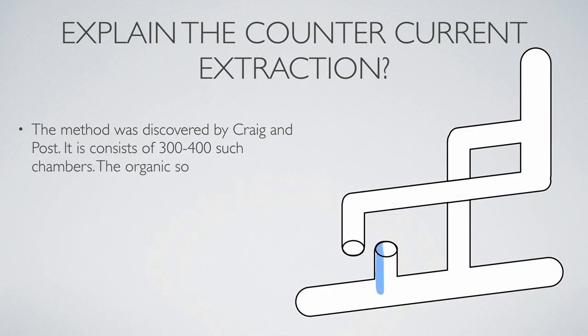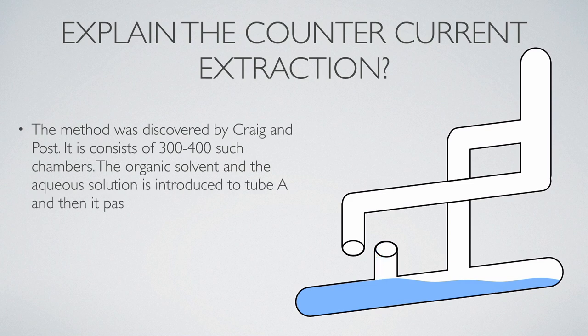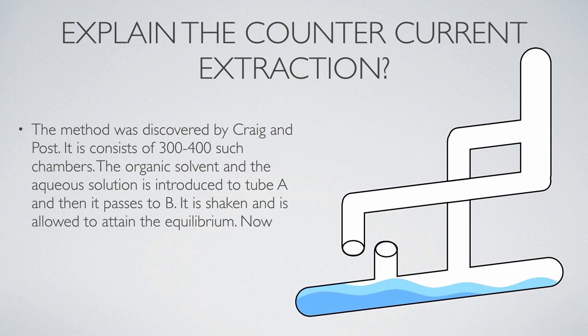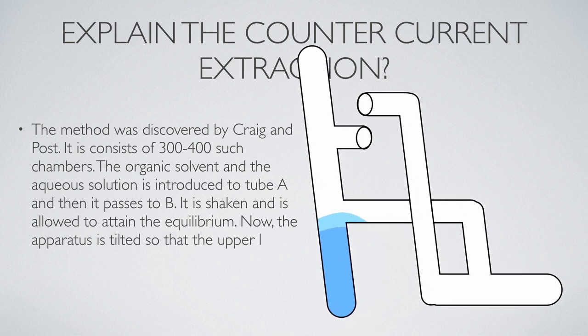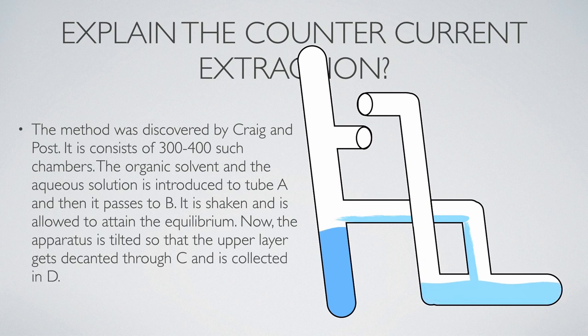The organic solvent and the aqueous solution is introduced to tube A and then it passes to B. It is shaken and is allowed to attain the equilibrium. Now the aqueous is tilted so that the upper layer gets decanted through C and is collected in D.